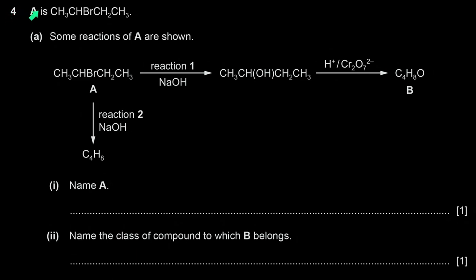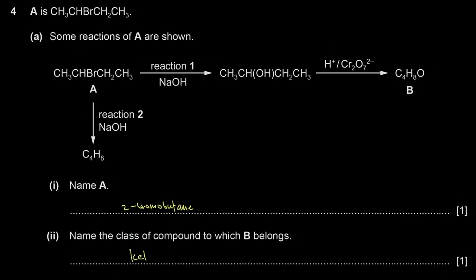Question 4: compound A is CH₃CHBrCH₂CH₃, which is 2-bromobutane — a four-carbon straight chain with a bromine on carbon 2. When the secondary alcohol (formed from A) reacts with acidified dichromate, it is oxidized. A secondary alcohol is oxidized by acidified dichromate to a ketone, so compound B belongs to the class of ketones.